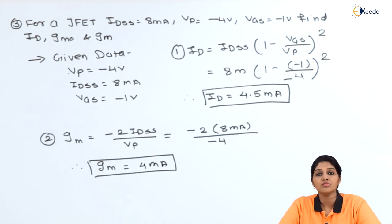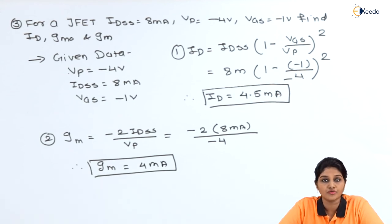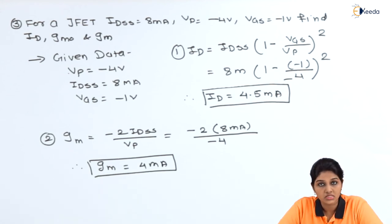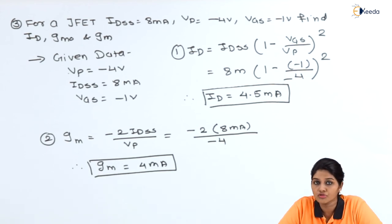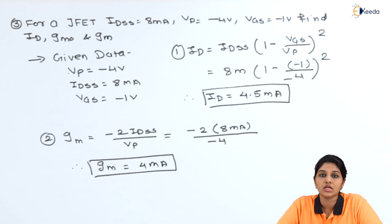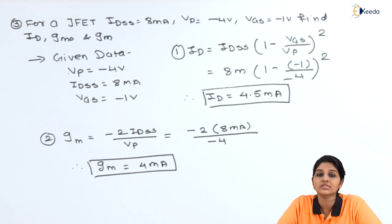These are the problems based on the various characteristics of JFET — finding transconductance, finding VGS, and finding ID for different values of VGS. I hope you understand this topic. Thank you very much for watching this video. Stay tuned and subscribe. Thank you.